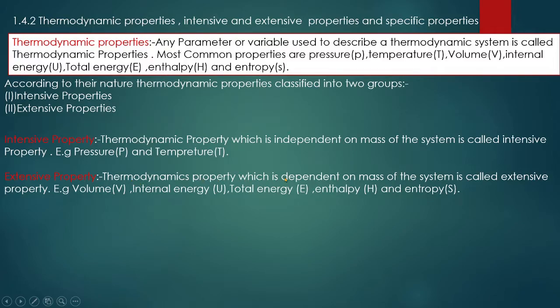Thermodynamic properties which depend on the mass of the system are called extensive properties. For example, volume, internal energy, total energy, enthalpy, and entropy are extensive properties.